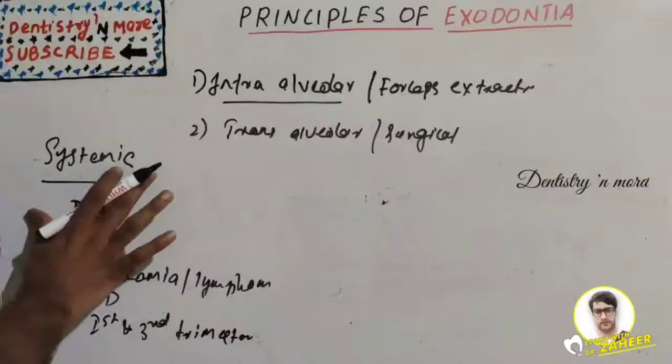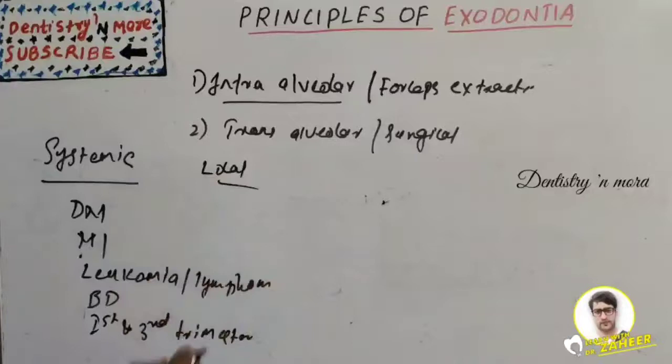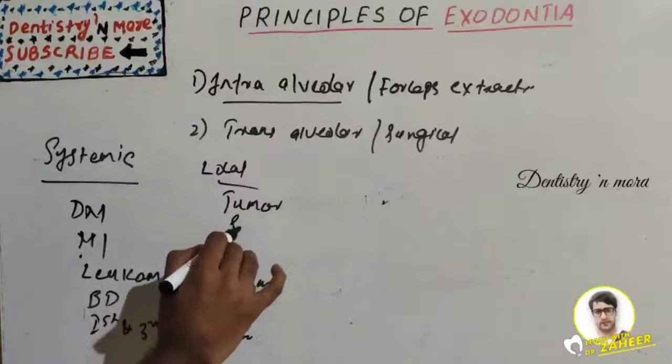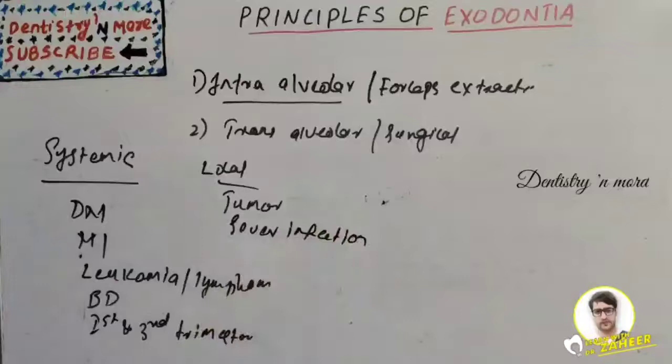Local contraindications include a tumor at the site of extraction or severe infection. When there is severe infection at the tooth site, the local anesthetic won't be effective and we cannot proceed with a proper extraction. These are the systemic and local contraindications of exodontia.